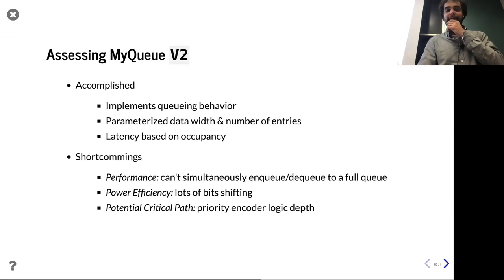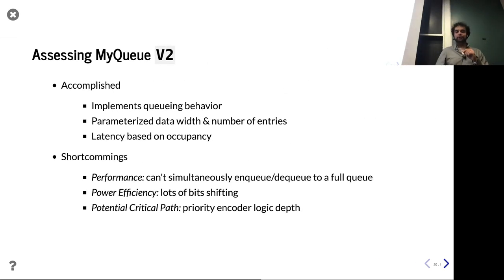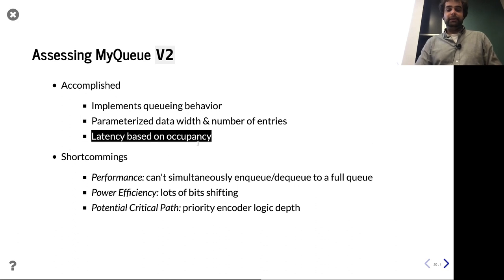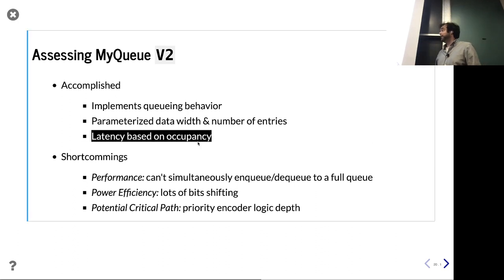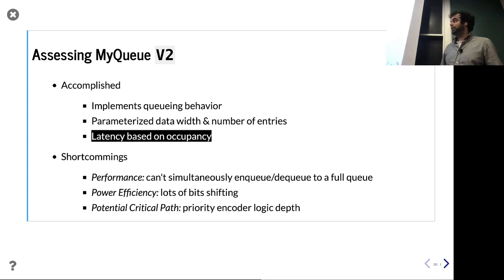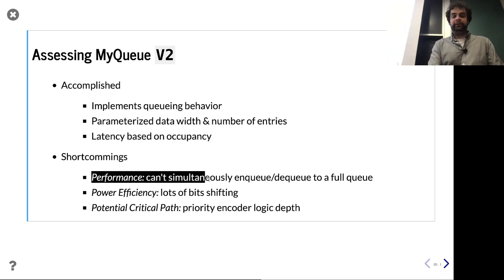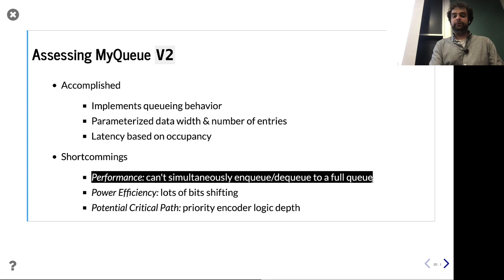Let's go ahead and assess what we've done. We have queueing behavior, still parameterized data width and number of entries. Unlike the last one — and this is the key improvement — our latency is now based on how full it is. If the queue is empty, it goes in and comes out the next cycle; it doesn't need to wait numEntries cycles. That's a big improvement. What are we missing? We intentionally regressed on the pipe-equals-true feature, so we can't simultaneously enqueue and dequeue to a full queue.